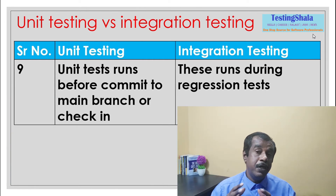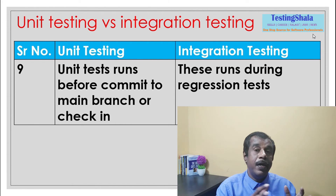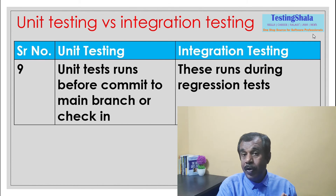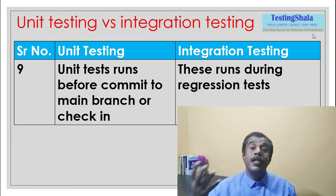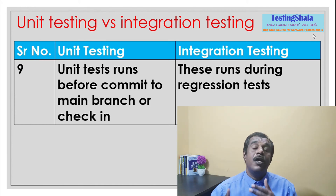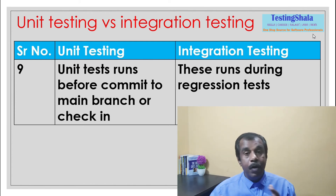The ninth difference is about when tests are run. Unit test cases are run whenever a developer completes a particular component and checks in the code — whether to GitHub or anywhere — just to ensure the new component has not broken anything. Integration test cases run as and when multiple modules or components are getting integrated into the code base, and more integration test cases are written and executed to ensure all integration points between components work correctly.